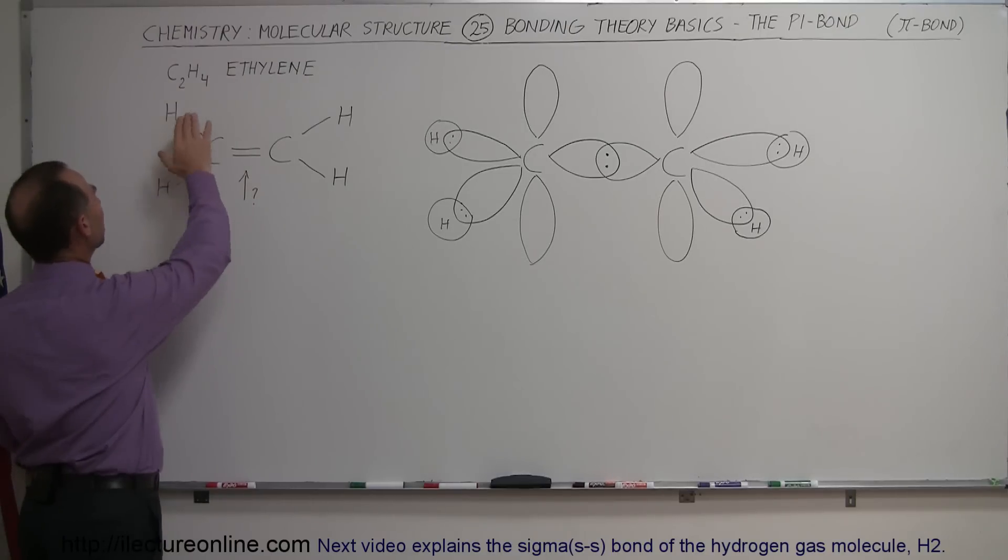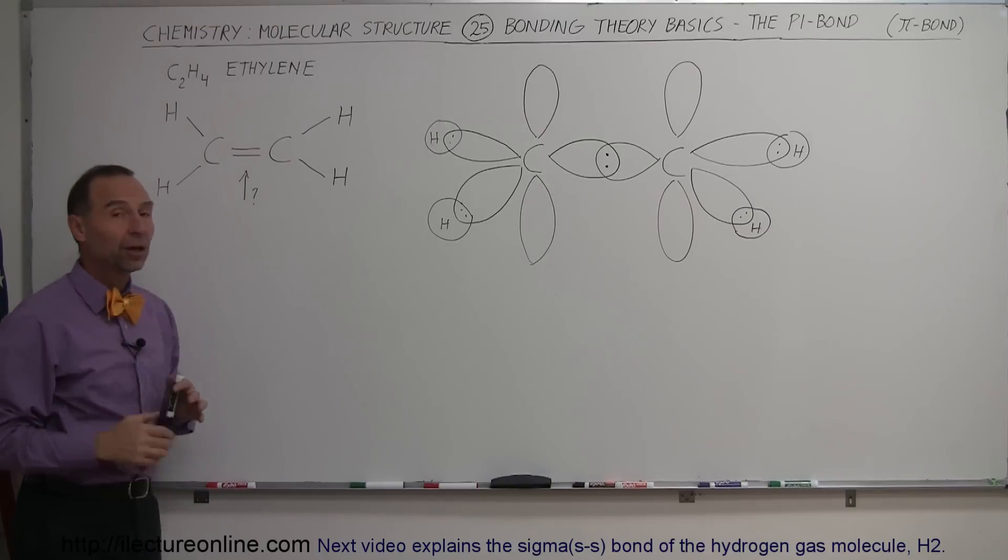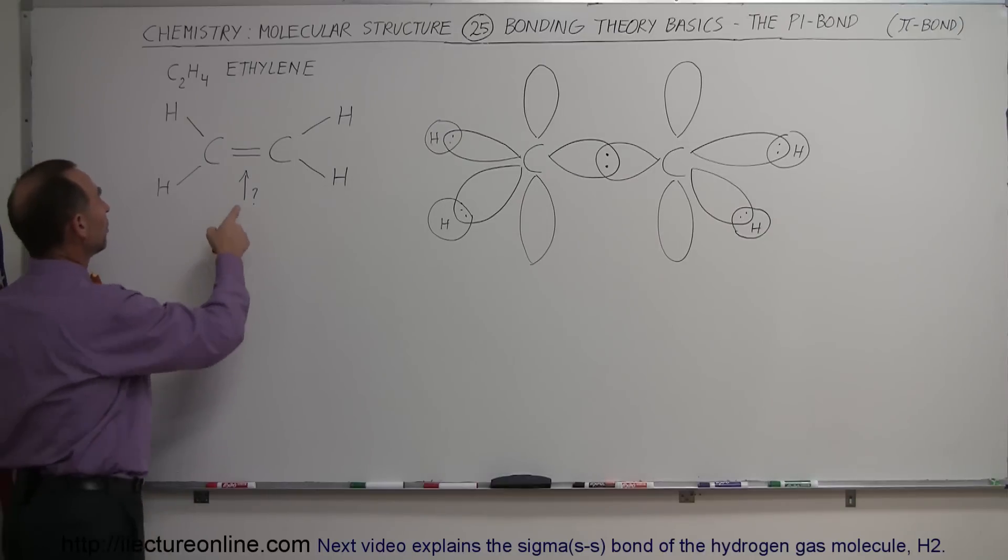The ethylene molecule is C2H4, two carbons, and two hydrogens on each carbon like that. From the Lewis perspective, you will need a double bond between the carbons because otherwise you would not have all four of the valence electrons involved in bonding.